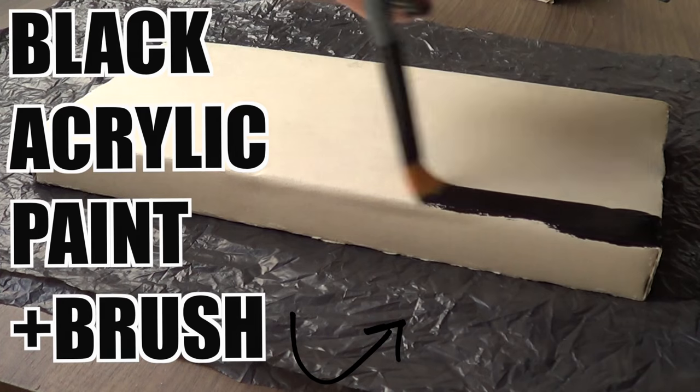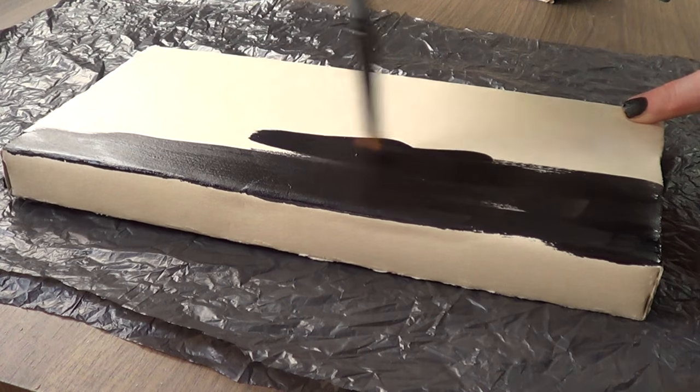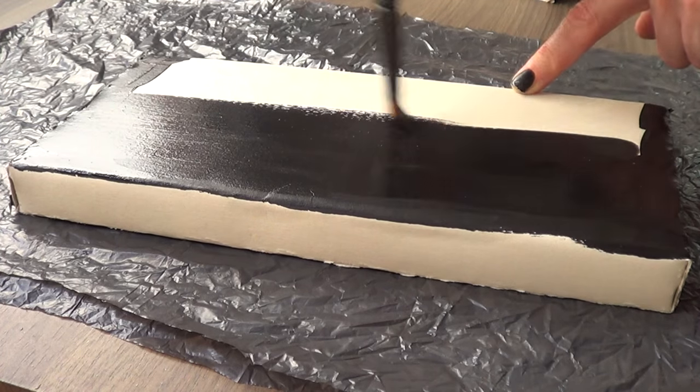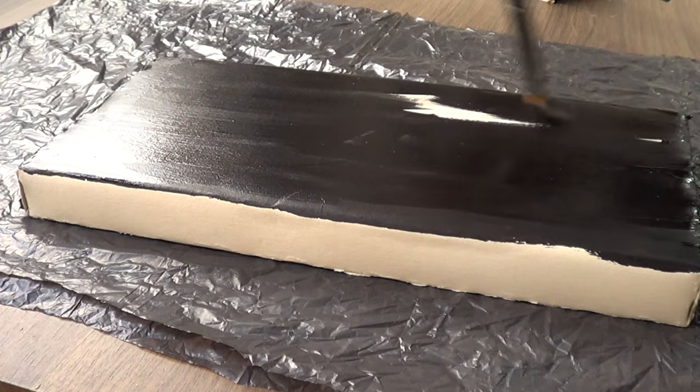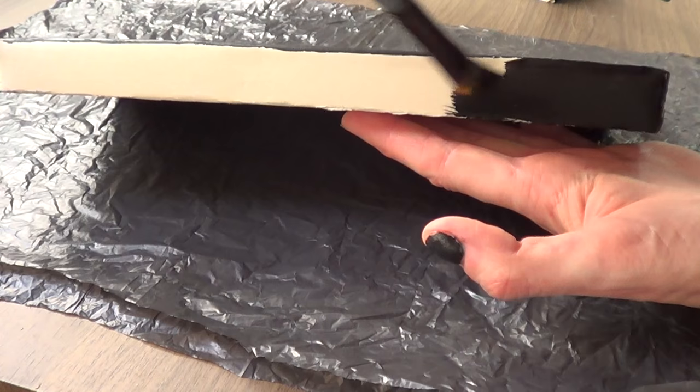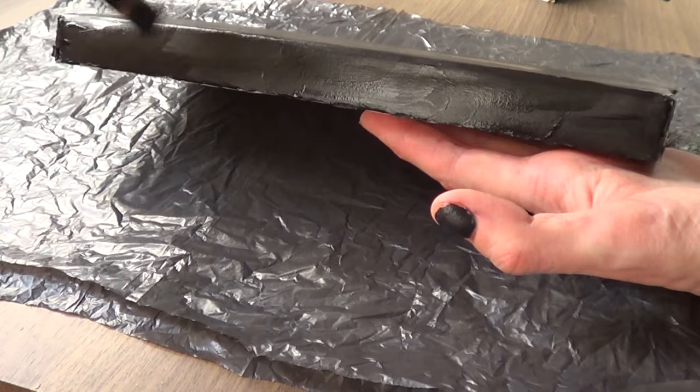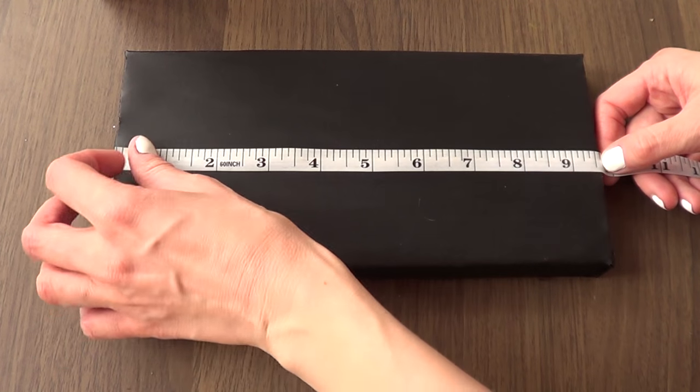Now it's time for the fun part. We're going to be decorating these pieces. I'm just going to be using some black acrylic paint and I'm just going to cover the whole thing. I'm going to be using my brush as well, and I'm going to be giving this a few coats until my black is just solid.